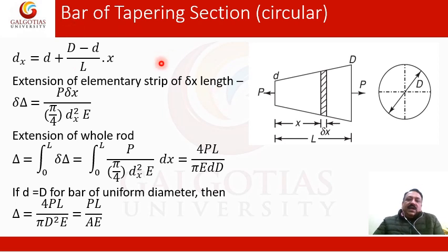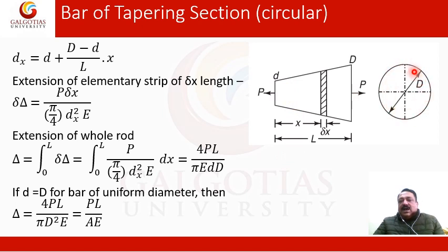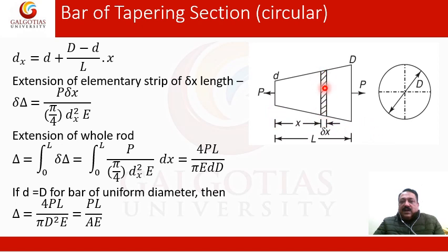Bars of tapering section. On the right-hand side of the slide, you will find a circular bar. From the side view, it is a conical bar where the big end has diameter capital D, while the smaller end has diameter small d. The total length of the bar is L. We consider a section at a distance x from the small end and take an elementary strip of thickness delta x. The whole bar is subjected to tensile load P — two equal and opposite forces acting at the opposite faces, one at the big end and one at the small end.